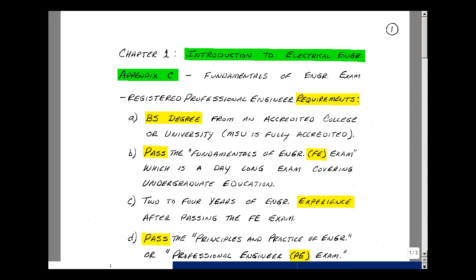Many of you will need to become a registered professional engineer, and some of the requirements are listed in Appendix C. The first is that you need to get a Bachelor of Science degree from an accredited college or university. MSU has been fully accredited since 1939.